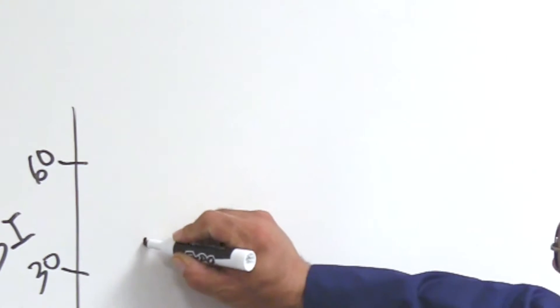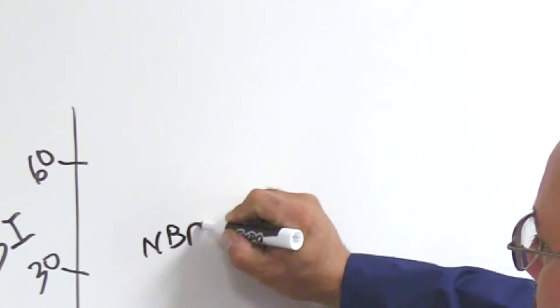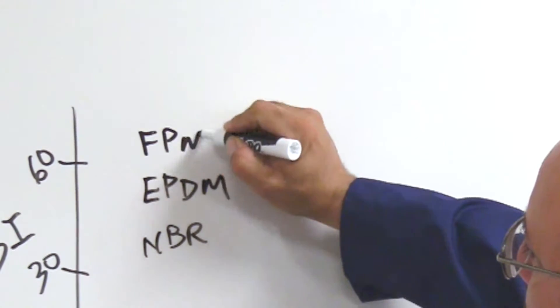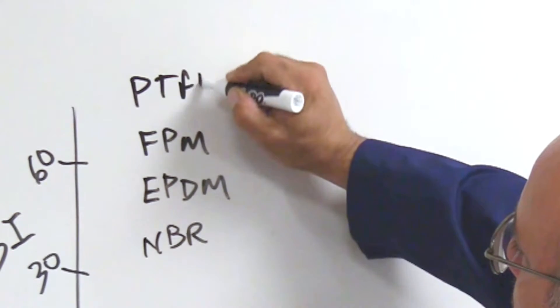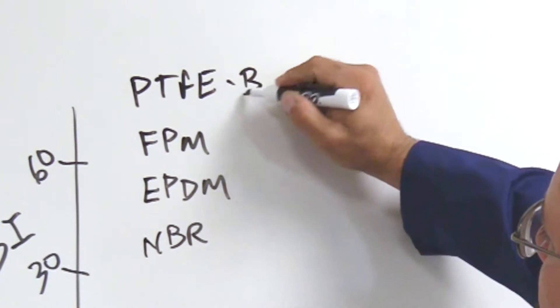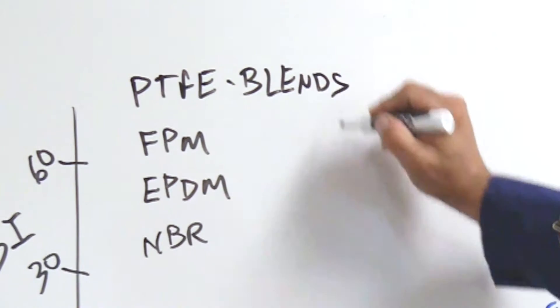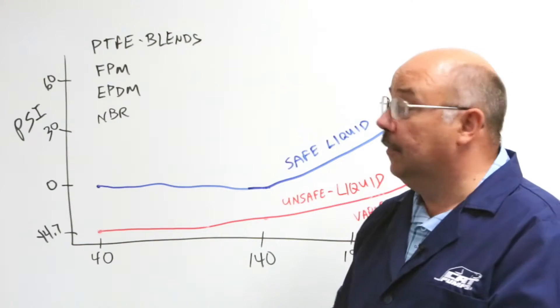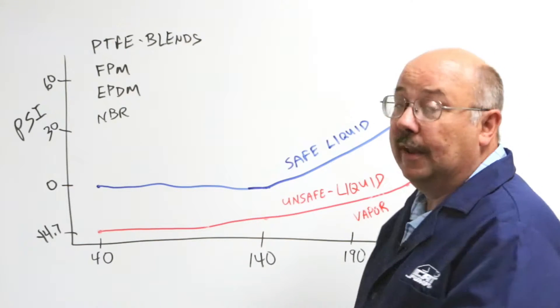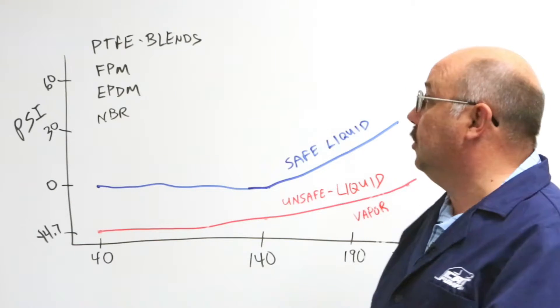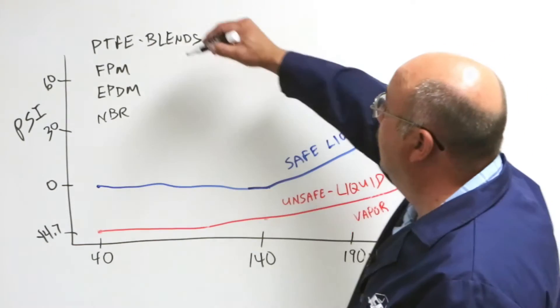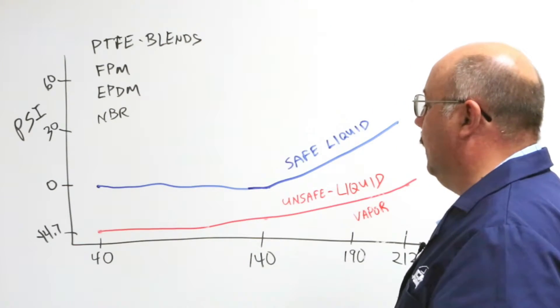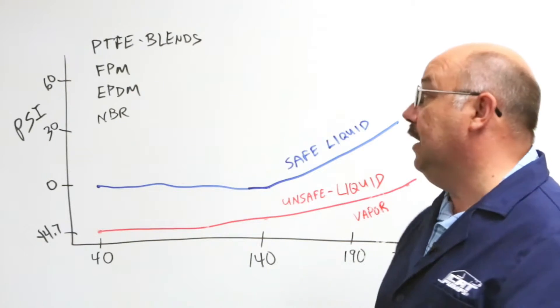We have different seal materials. We have NBR, we have EPDM, we have FPM or VITON, and we have PTFE blends. By blends I mean some of the Teflon seals that we have have carbon in them. Some have glass fibers in them. Some have graphite in them. All these things help the seal to keep its shape and to run with whatever liquid we're pumping. So we have all these different possibilities. And then we want to look at what are the temperature capabilities of each of these seals.